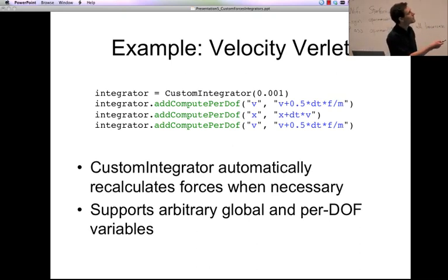So we just say we're going to create a custom integrator. And you give it your time step, so one femtosecond. And then you just call one function on this integrator to define each step of your integration algorithm. So the first step, we're going to do a computation for every degree of freedom. We're going to compute a new value for its velocity. And we're going to update it to this, V plus your force times time step divided by mass over 2. Second one, we're going to compute your new positions. And then velocity Verlet has a second velocity update. So there you go, four lines of Python code. And you've just implemented a completely new integrator in OpenMM.